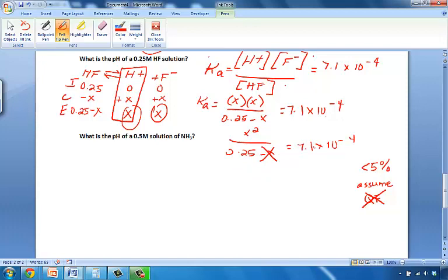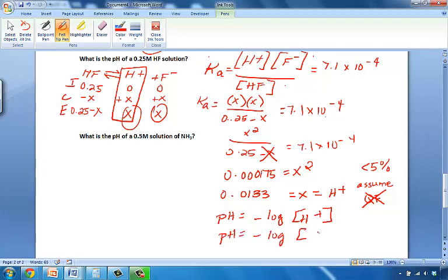0.25 times 7.1 times 10 to the negative 4 will give us 0.000175, and that will equal X squared. We will take the square root of this guy, and X will equal 0.0133. Now, what is X? X is H+. Bingo! Let's plug that into the pH is equal to the negative log of H-plus concentration equation, and we can solve for pH. Finally, 0.0133 is the concentration that we just plugged in, and we should end up with a pH value of 1.88.